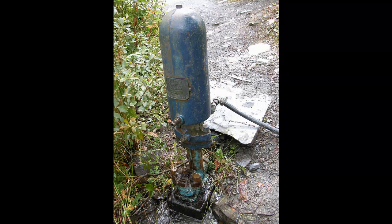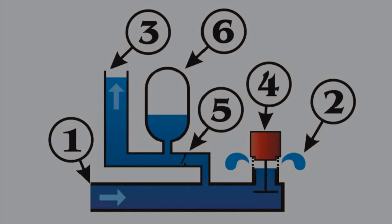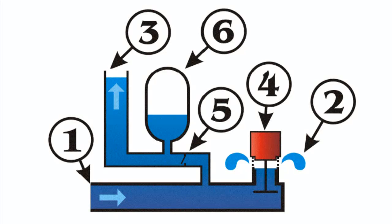The first self-acting ram pump was invented by the Frenchman Joseph Michel Montgolfier, best known as a co-inventor of the hot air balloon, in 1796 for raising water in his paper mill at Voyron. His friend Matthew Boulton took out a British patent on his behalf in 1797.